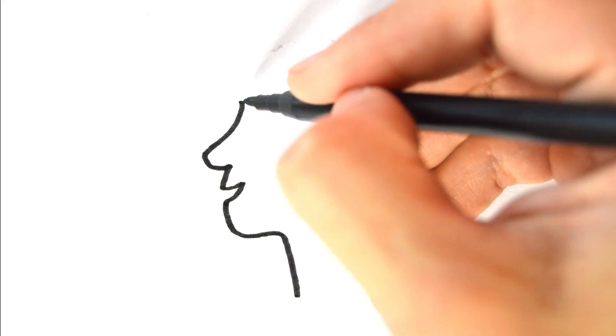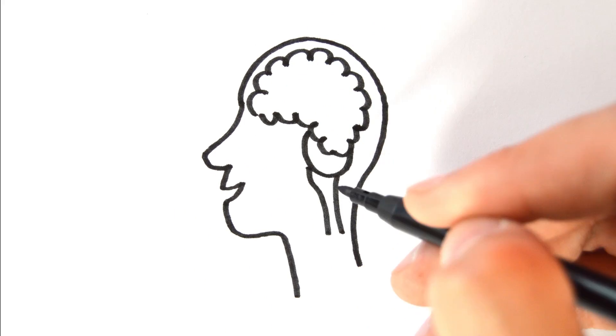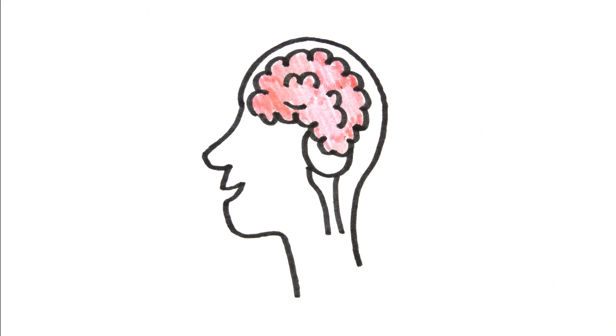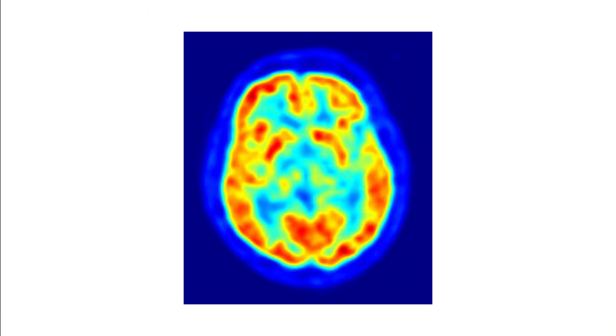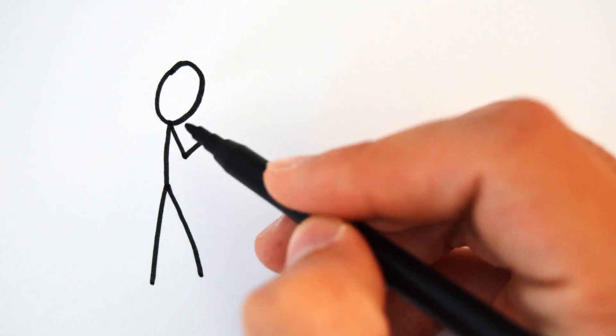Did you know that a PET scan of the brain uses the principle of matter-antimatter annihilation to work? That's right, there is complete annihilation happening inside your brain in order to figure out if it's working right. But don't let that scare you. The doses are small and the procedure is very safe.